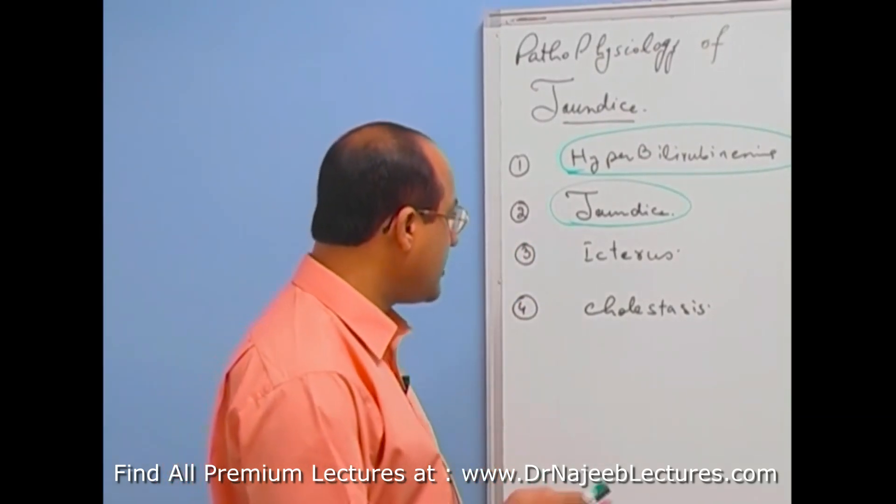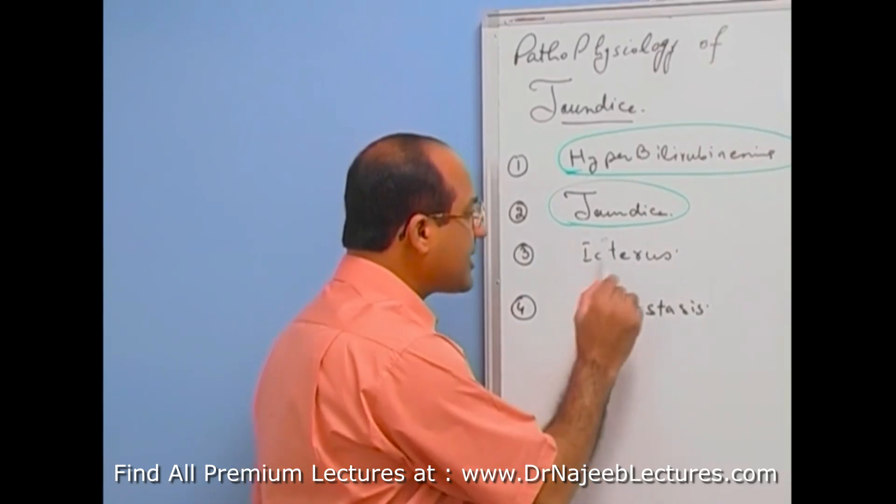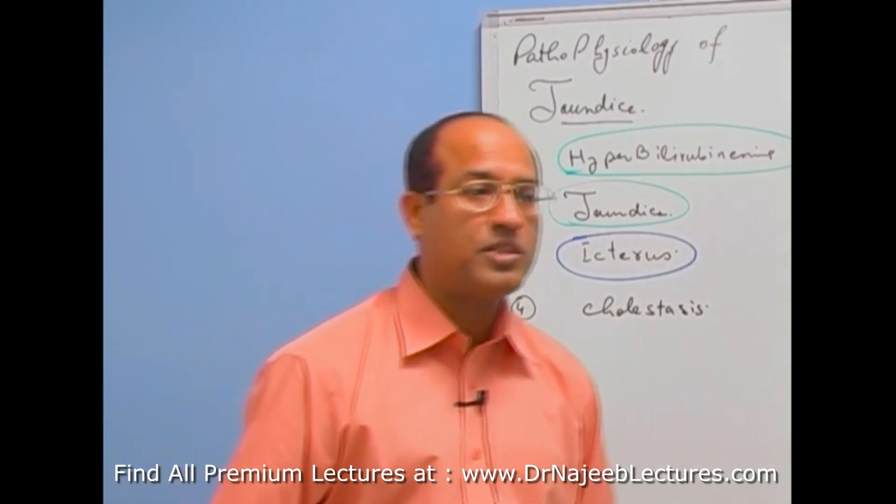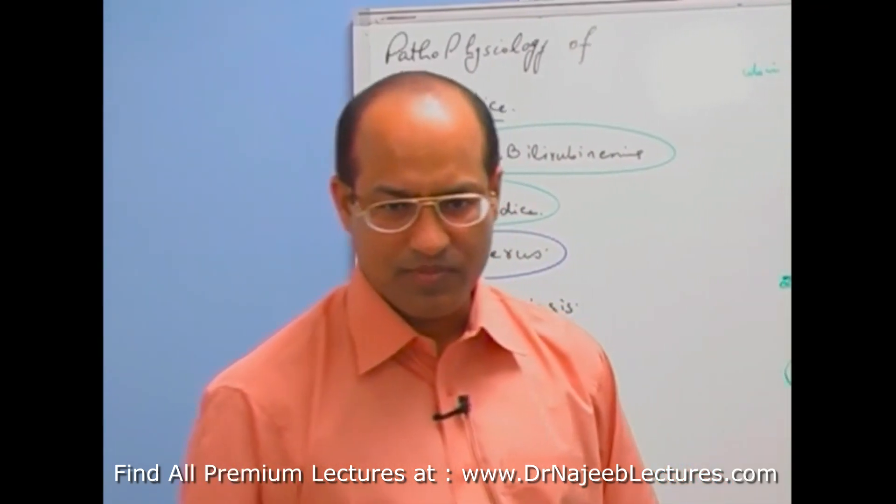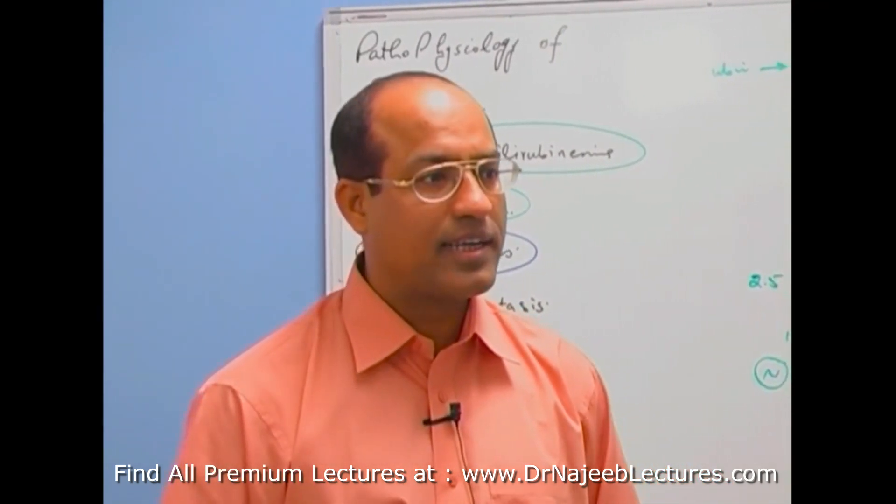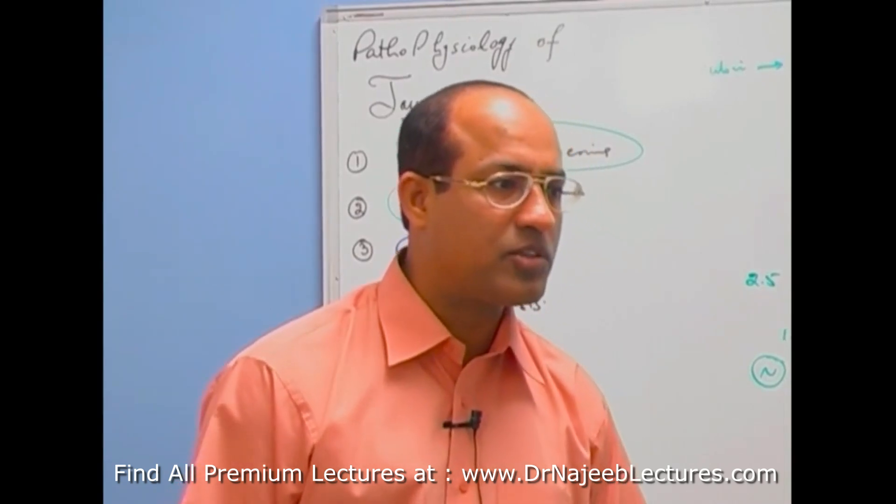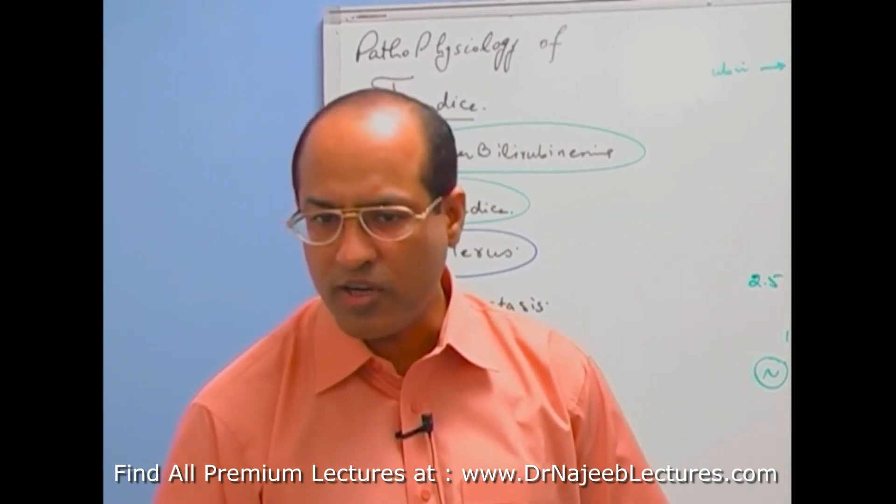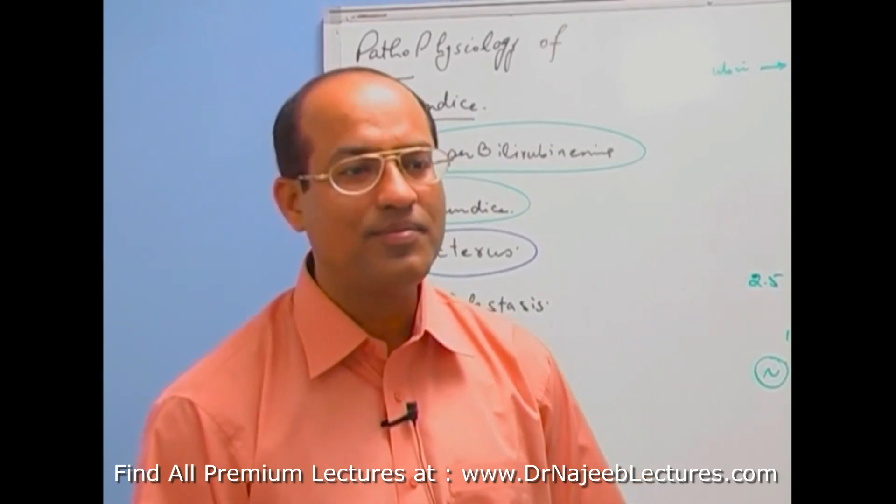Another important thing is, what is icterus? Icterus is the term which is used when specially due to hyperbilirubinemia, sclera turns yellow. When we say I can detect icterus in this patient, it means we are specifically referring to yellow discoloration of sclera. Is that right?